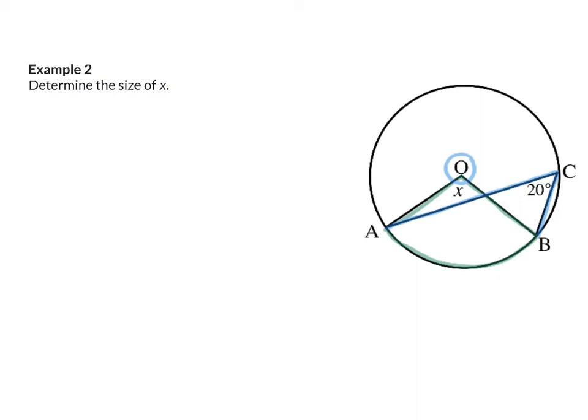So you need to realize that every single word of a theorem is important, and here you have to realize that it's not two angles on the circumference, but one on the circumference and one at the center. So I can write that x will be twice the size of angle C, which means x will be 2 times 20, and that means x is 40. My reason for saying x is 2 times angle C is angle at the center twice the angle at the circumference.